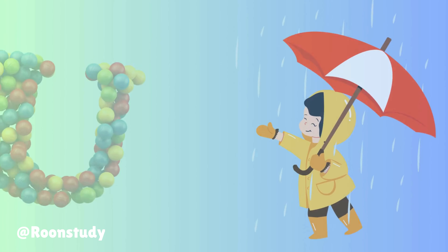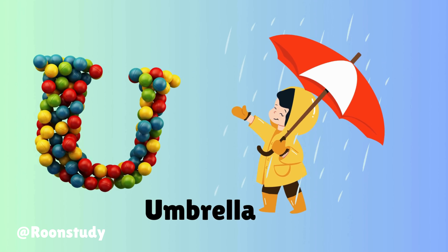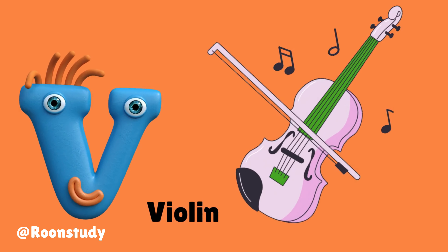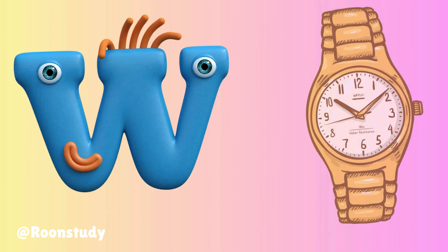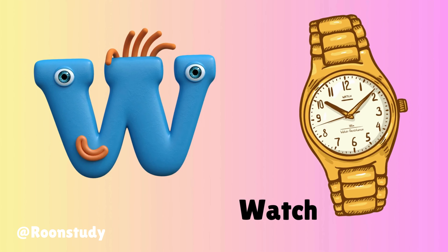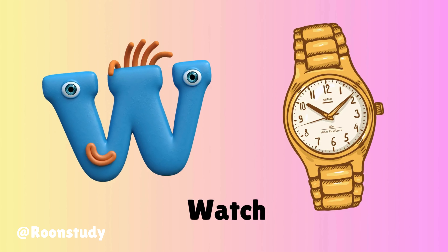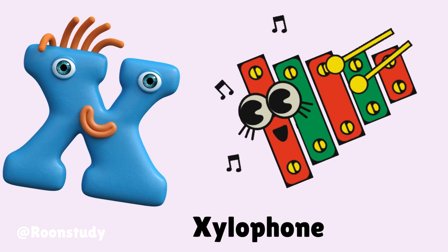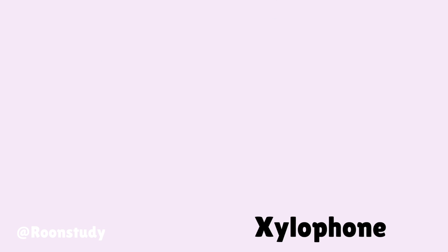U is for umbrella, u-u-umbrella. V is for violin, v-v-violin. W is for watch, w-w-watch. X is for xylophone, x-x-xylophone.